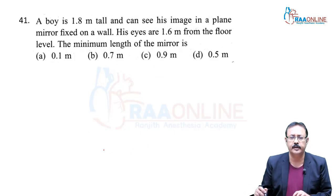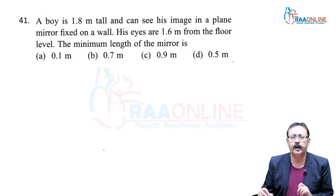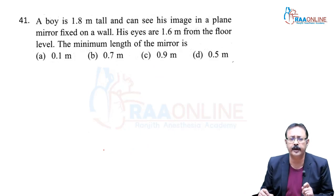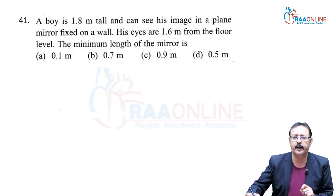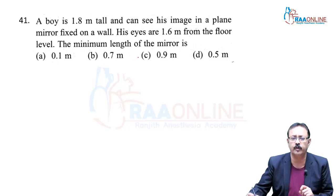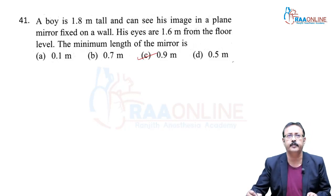Problem 41. A boy is 1.8 m tall. To see his full image in a plane mirror, the minimum mirror length required is half his height, which is 0.9 m. We go with option C.